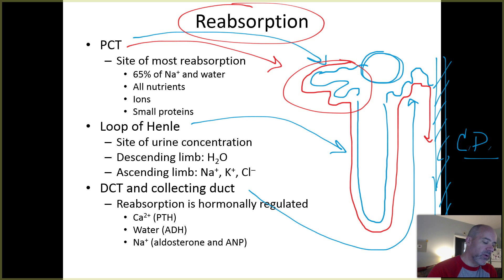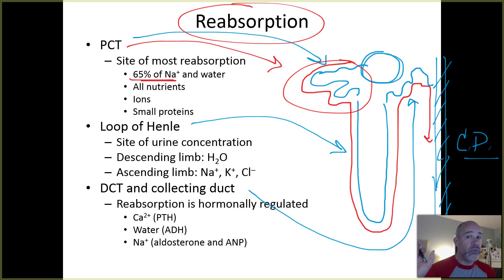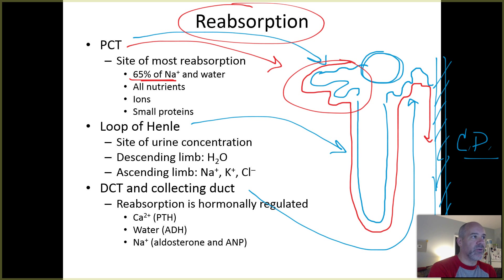The proximal convoluted tubule is the very first part of a nephron and is where most reabsorption takes place. Most of your sodium ions are reclaimed here — remember aldosterone, the hormone produced by the adrenal cortex that tells the kidneys to reclaim more sodium ions. Aldosterone tells these structures to take sodium ions out of the developing urine and return them to the tissue fluids and blood.